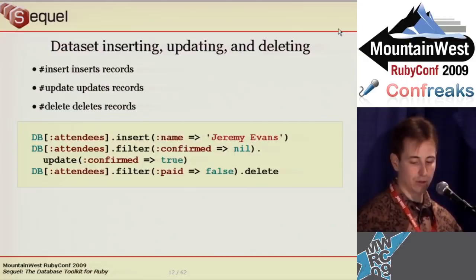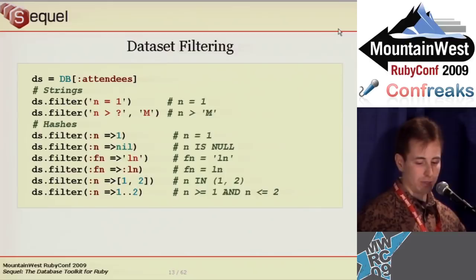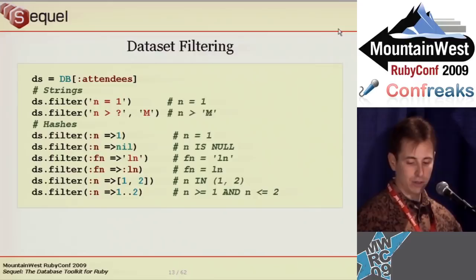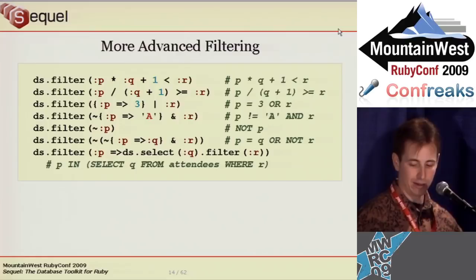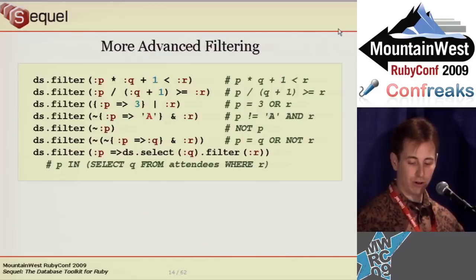You should note the use of symbols for database columns. Sequel generally treats Ruby strings as SQL strings and Ruby symbols as SQL columns. Sequel supports simple filters using strings and hashes, using hashes for both equality and inclusion. Sequel also lets you write queries as Ruby expressions without using parse tree by adding methods that Ruby does not define. These examples show that Sequel knows about Boolean logic, leading to cleaner-looking SQL. The subselect example shows how datasets can be used with other datasets.